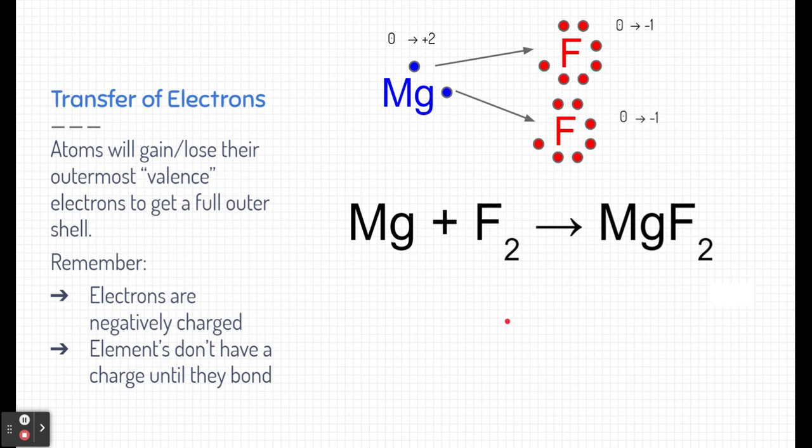Remember, electrons are negatively charged. Also remember, elements do not have a charge when they're just plain elements, when they're not bonded. So here's magnesium, zero charge, and fluorine, which is also zero charge. Now, when magnesium and fluorine attach and form magnesium fluoride, those charges reveal themselves because magnesium lost two electrons and each of those fluorines gained one electron each.